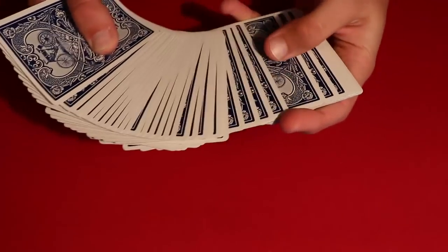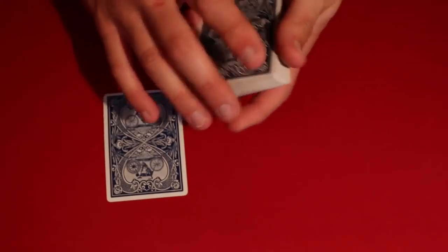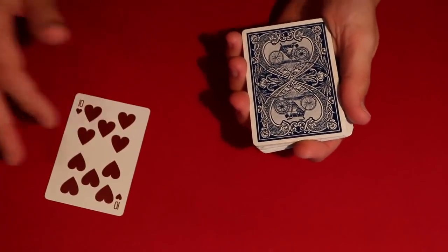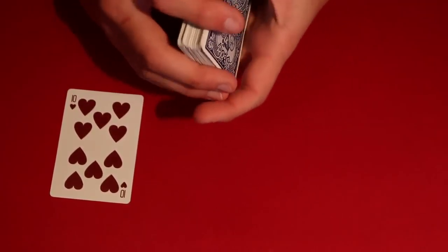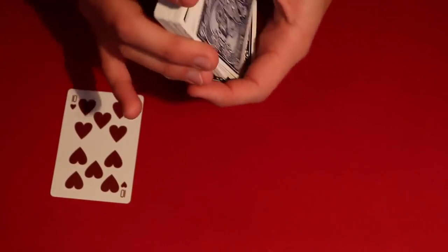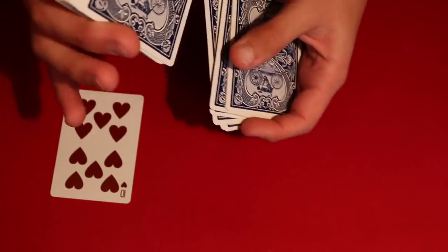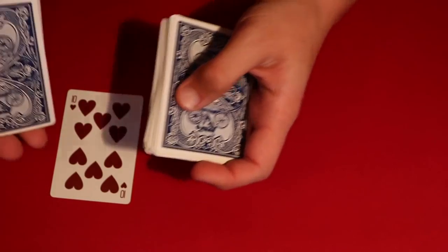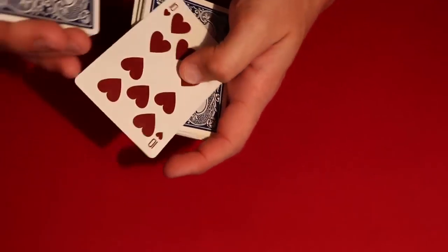So you go ahead and you have the spectator pick any card that they want to. Let's say in this case it's a 10 of hearts. You go ahead and what you do is tell your spectator to tell you when to stop, and all you're doing is a regular overhand shuffle. The moment they tell you to stop, I'll leave the card right here.